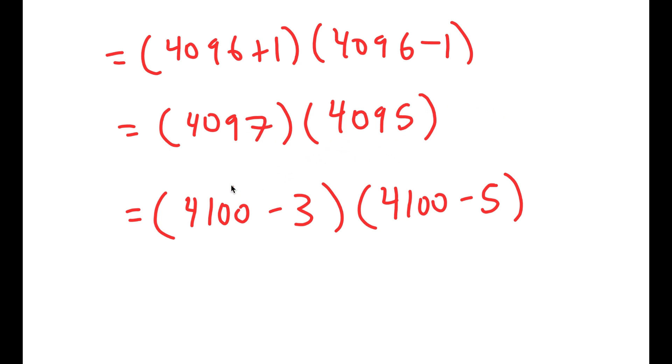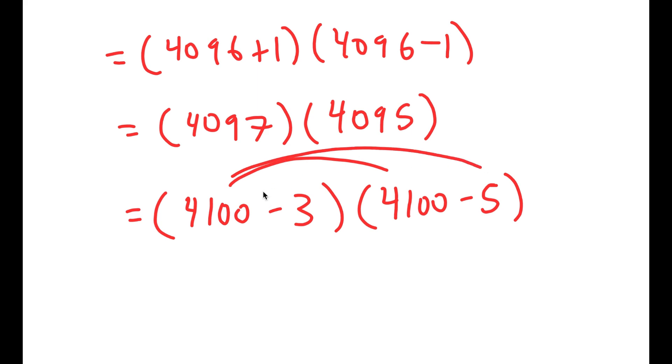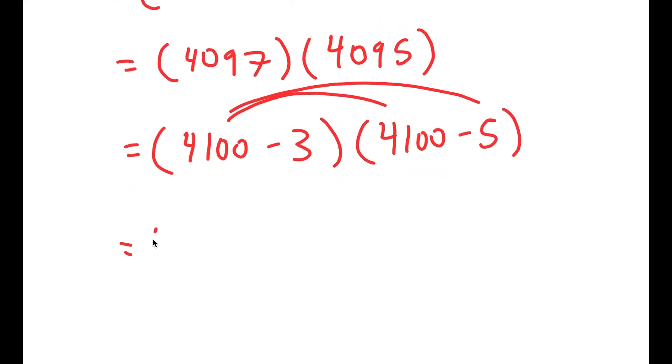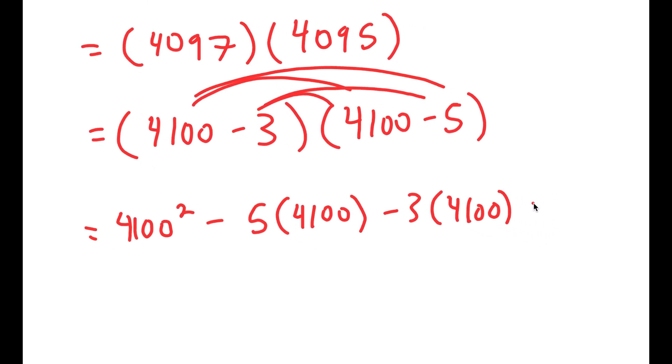So now I'm going to distribute my 4,100. So I get 4,100 squared minus 5 times 4,100, and then I have minus 3 times 4,100 minus 3 times negative 5.